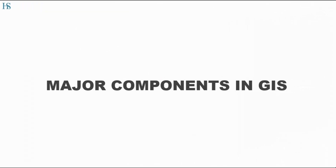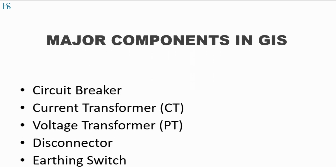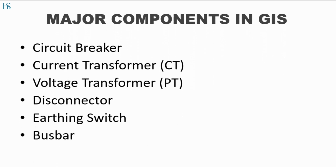So now let us understand the major components of GIS. It consists of circuit breakers, current transformers, voltage transformers, disc connectors, earthing switch, and a bus bar.